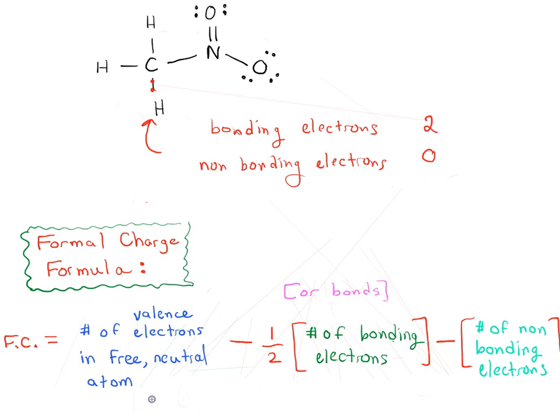So we can use this to plug into our formal charge formula. In free neutral hydrogen there is one valence electron, right? It's the lightest element of all. One valence electron and now we're gonna subtract half the number of bonding electrons which is two. So one half times two gives us one and there's no bonding electrons. So one minus one minus zero gives an answer of zero.